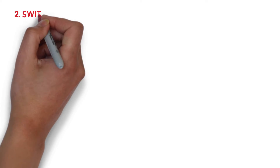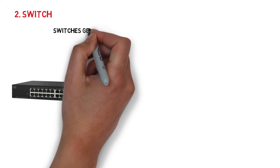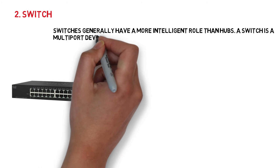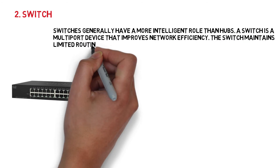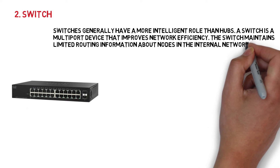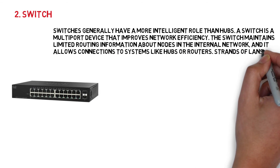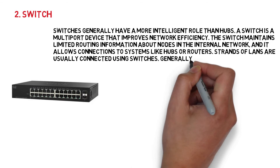2. Switch. Switches generally have a more intelligent role than hubs. A switch is a multi-port device that improves network efficiency. The switch maintains limited routing information about nodes in the internal network, and it allows connections to systems like hubs or routers. Strands of LANs are usually connected using switches.